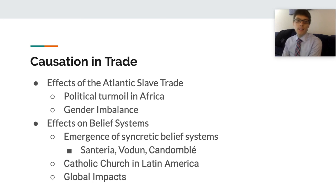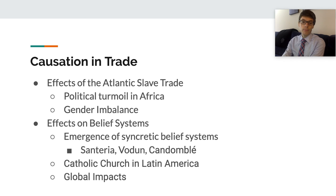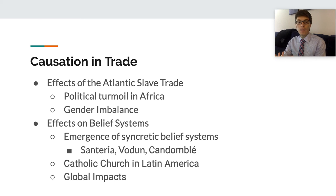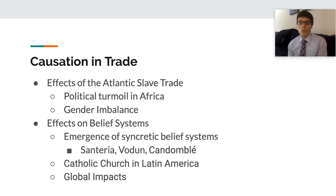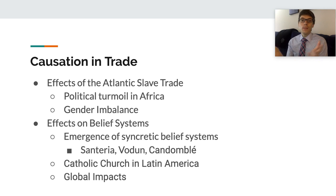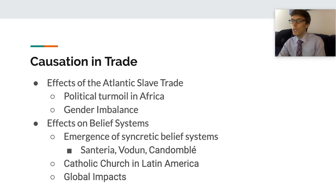Those most affected by the slave trade were the peoples of West African civilizations in what would be present-day Ghana, where most Africans were kidnapped or sold. Gender distributions in those regions became very imbalanced because more than two thirds of slaves taken were male, as they were taken for labor. The resulting predominance of women led to a rise of polygamy and forced women to take on roles that had traditionally been assigned to men.